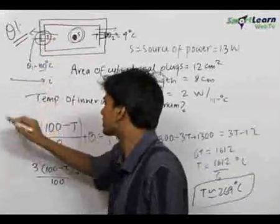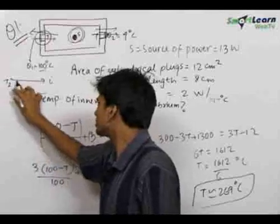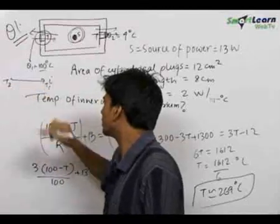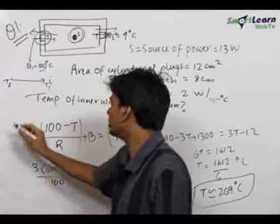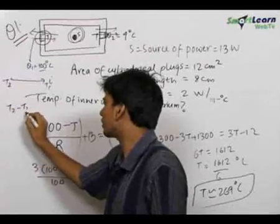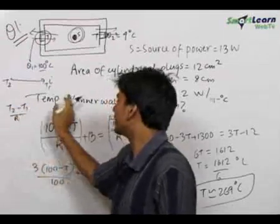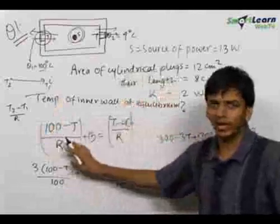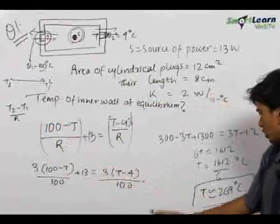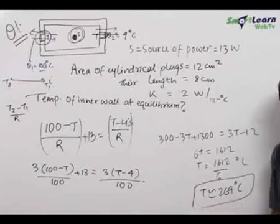If you are writing heat current in this direction, suppose this is temperature T1 here and T2 here, you always write (T2 - T1)/R to get the heat current in this direction, then you will never get the wrong answer. So the final answer for this question is 269 degrees Celsius.